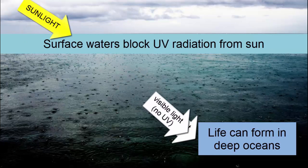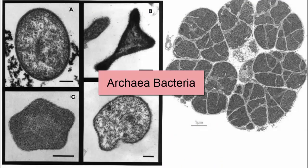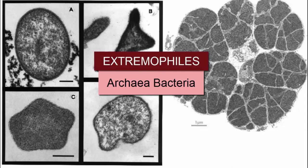What were these first organisms like? The very simplest single-celled bacteria, likely ones that could handle extreme conditions such as high heat and no light, also known as extremophiles.